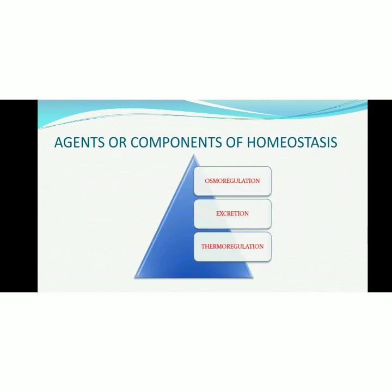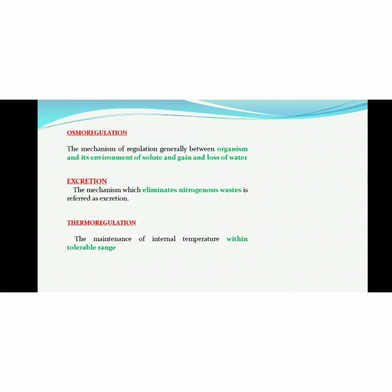Homeostasis has three components and agents. Homeostasis is not independent — it depends on them. What is osmoregulation? Osmoregulation is basically the mechanism of regulation between an organism and its environment of solute and gain and loss of water. The main keywords are regulation of solute and water between the external and internal environment.